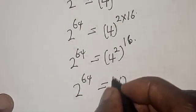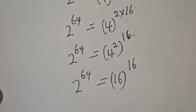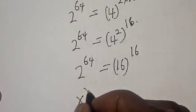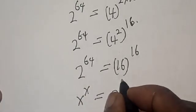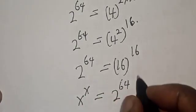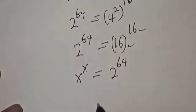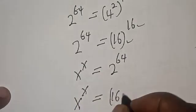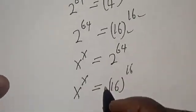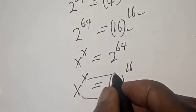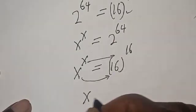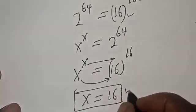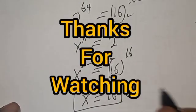Remember that we have s raised to power s is equal to 2 raised to power 64, and 2 raised to power 64 is equal to 16 raised to power 16. By comparing both sides, therefore s is equal to 16. That is our final answer. If you have enjoyed the class, please don't forget to like, share, comment, and subscribe. Thank you.